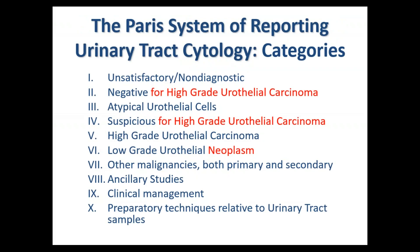How do we report urine cytology? The Paris System of Reporting Urine Cytology was published in 2015, with the book coming out in 2016. It uses a tiered reporting system: unsatisfactory/non-diagnostic, negative for high-grade urothelial carcinoma (not 'negative for malignancy'), atypical urothelial cells, suspicious for high-grade urothelial carcinoma, high-grade urothelial carcinoma, and low-grade urothelial neoplasm.